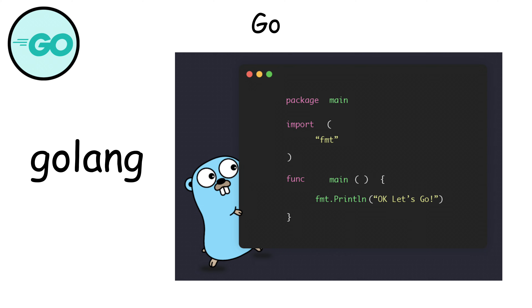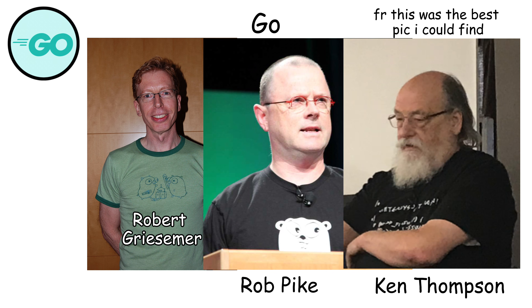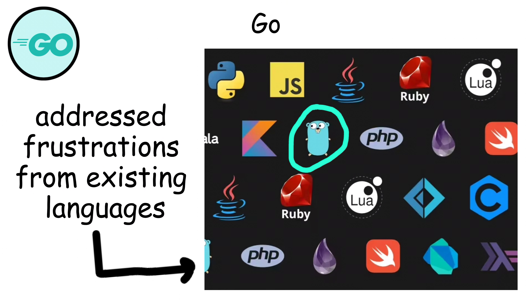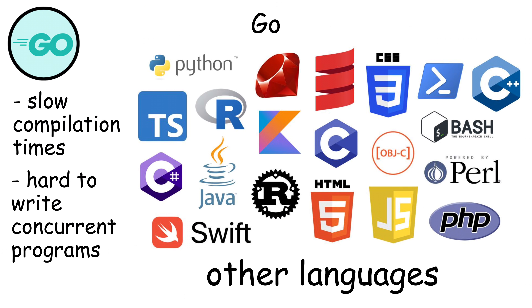Go, also called Golang, was created by Google in 2009 by Robert Griesemer, Rob Pike, and Ken Thompson, who also co-created Unix. The language was designed to address frustrations with existing languages, particularly around slow compilation times and difficulty writing concurrent programs.